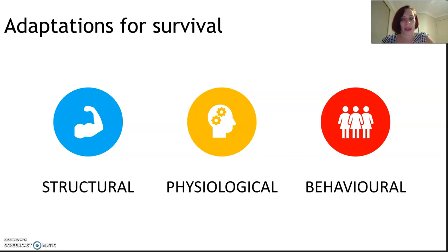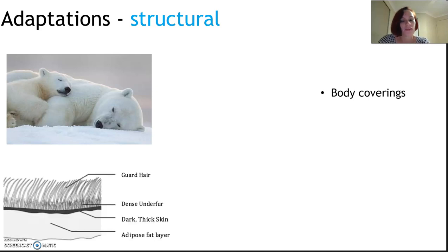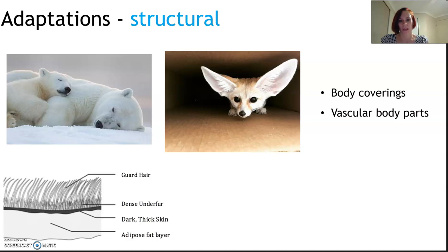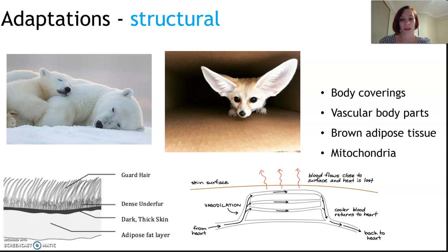Multicellular organisms display different types of adaptations with respect to temperature control: structural, physiological, or behavioral. All endotherms have structures that help them conserve or release heat — thick fur, blubber for insulation against cold, and vascular body parts such as big ears to increase heat exchange. If we need to cool down, that big surface area allows blood flow closer to the surface. We also have brown adipose tissue, a kind of fat tissue, with an increased number of mitochondria to generate more heat through cellular respiration.